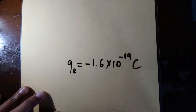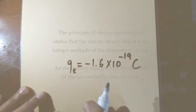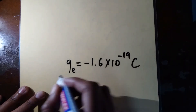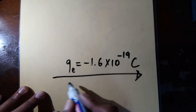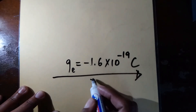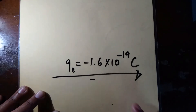To calculate the magnitude of charge on sphere Y, we need to know the principle of charge quantization. This principle states that the amount of charge on any object is an integer multiple of the elementary charge e. The elementary charge e is the amount of charge carried by one electron, with a value of negative 1.6 multiplied by 10 to the power of minus 19 coulombs.